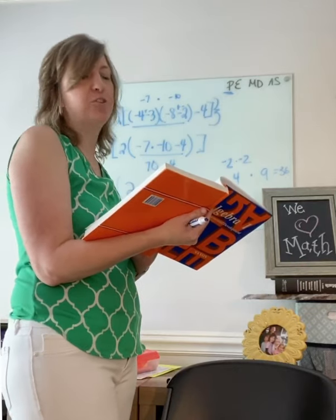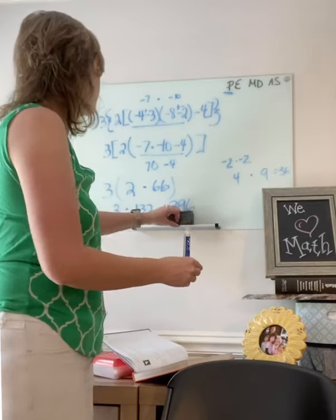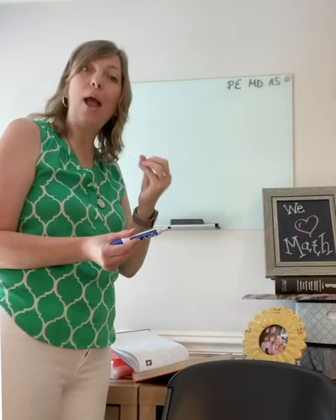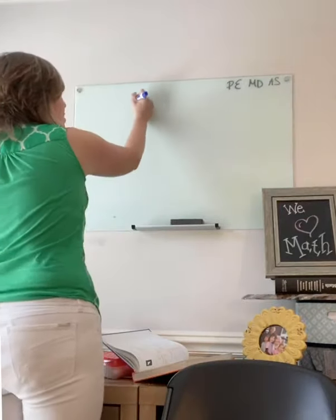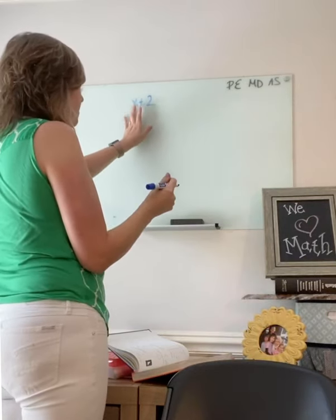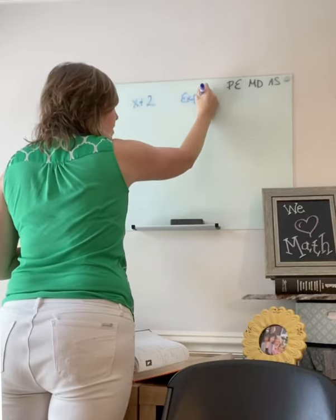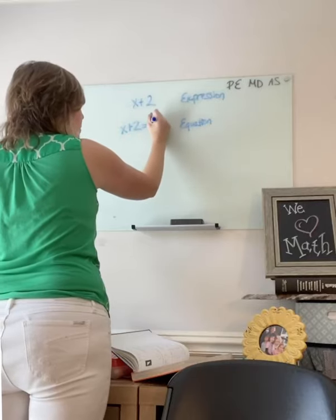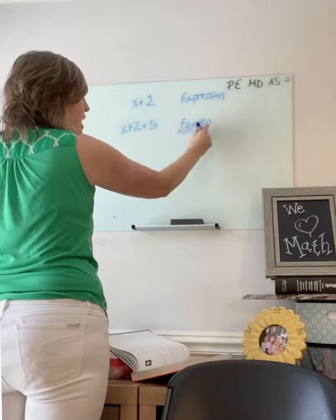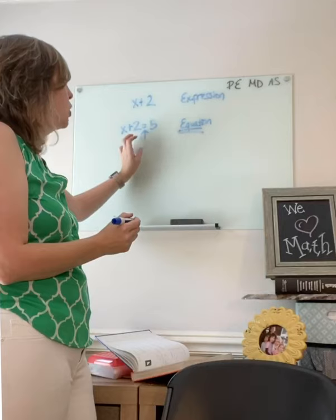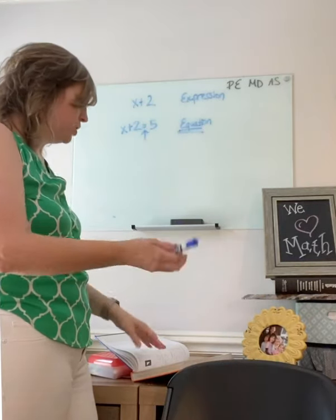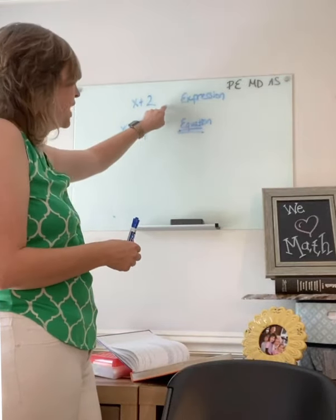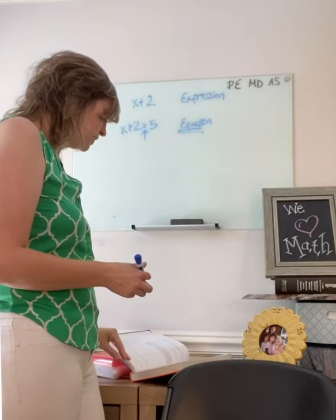Lesson 14 is all about algebraic expressions. An algebraic expression does not have an equal sign — an equation has an equal sign. For example, x plus 2 is an expression — a variable and a number. But x plus 2 equals 5 is an equation. So the difference between an expression and an equation is the equal sign. In an expression, you can add, subtract, multiply, and divide, but there is no equal sign. Your book is showing you different expressions.